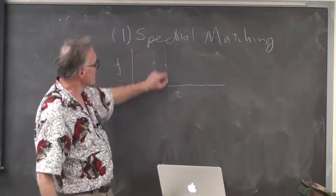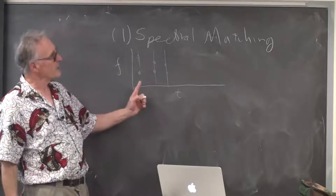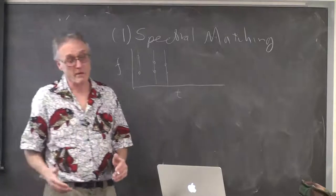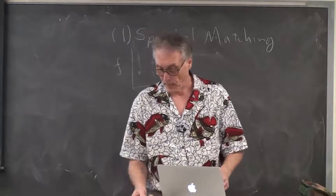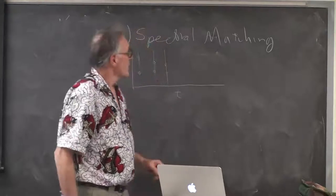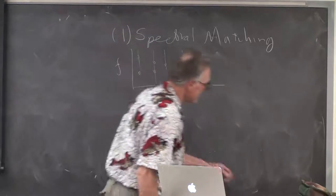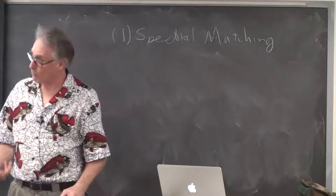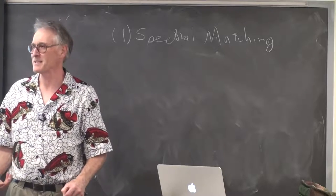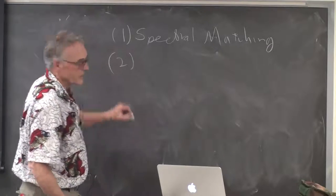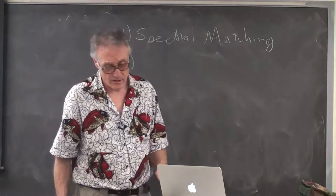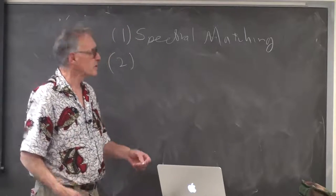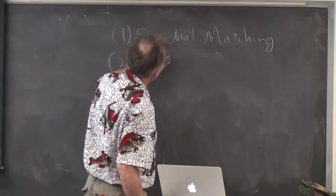You get the sound spectrogram of an instrument — time runs in one direction, frequency in the other — and the energy at each frequency is given by a color at various points. You match the sound spectrogram. Alternatively, you take slices through the spectrogram at different times and match the spectra to the instrument spectrum. If you do that, you'll get something that sounds a lot like the instrument.